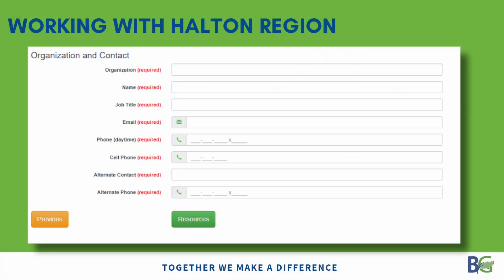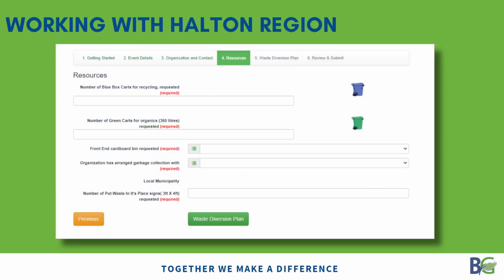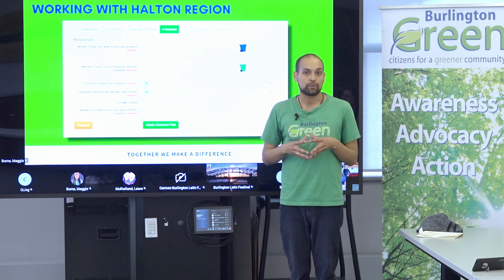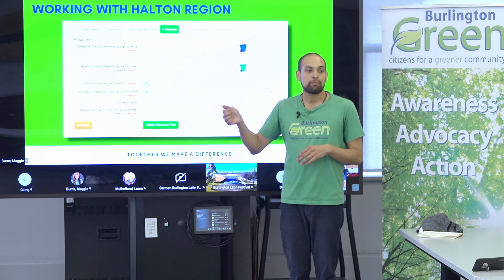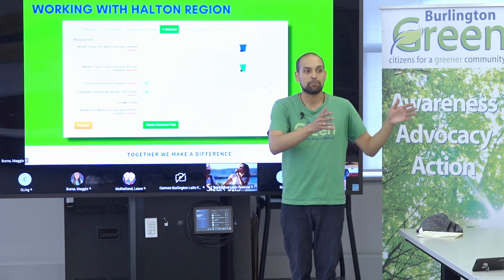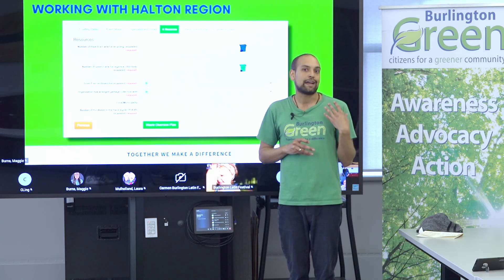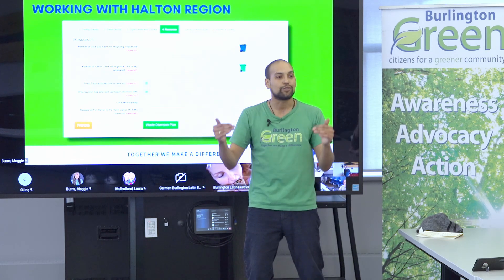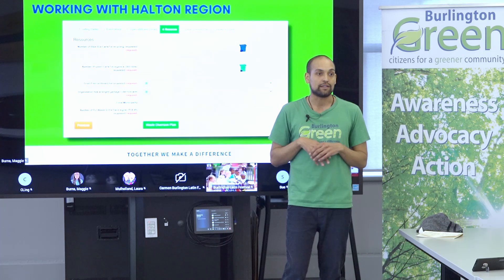The form asks about number of blue carts for recycling and green carts for organics, which you'll have to estimate your first year. If you've done the event before and you know the amount of solid waste collected — for instance, if you paid a private hauler who charged by weight — you can estimate from there. It's pretty good to bump your estimate up at least 20 percent just to be sure, and then do an analysis after the event so you can adjust for next year.